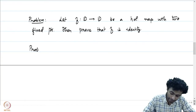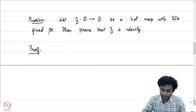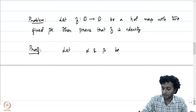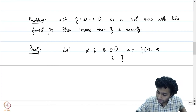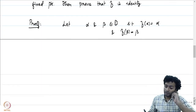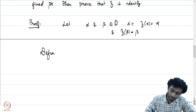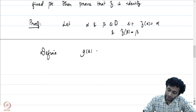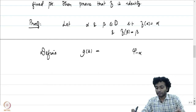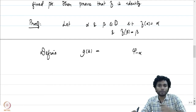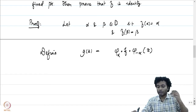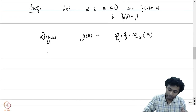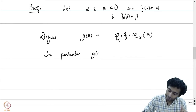Let us give a proof. Let alpha and beta be two distinct points in D with f(alpha) = alpha and f(beta) = beta. Define g(z) = phi_alpha ∘ f ∘ phi_{-alpha}(z), where phi_{-alpha}(z) = (z + alpha)/(1 + ᾱz). This map sends 0 to alpha, f sends alpha back to alpha, and phi_alpha sends alpha back to 0, so g(0) = 0.